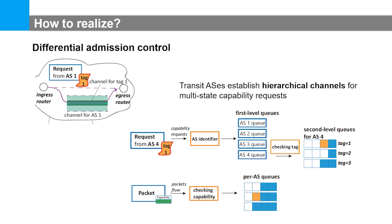We introduce how to realize differential admission control. Transit ASes establish hierarchical channels for capability requests. The AS identifier and tag are used to identify the first-level queue and second-level queue. Therefore, if an attacker launches a link flooding attack by sending a large number of requests, the misbehaving requests are placed into a sub-queue with no priority due to their low legitimacy factor, while requests from active benign users are placed into a sub-queue with high priority. The access priority of legitimate users will not be influenced, achieving fine-grained access control of network capability.